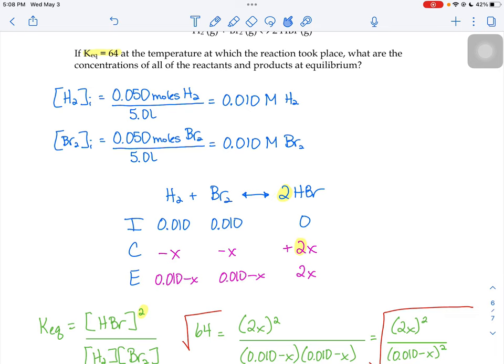The change for the hydrobromic acid is going to be twice that of the hydrogen and bromine due to the two in the balanced chemical equation.